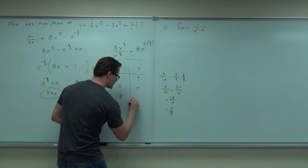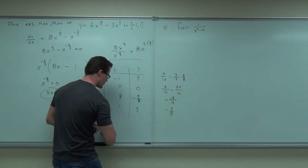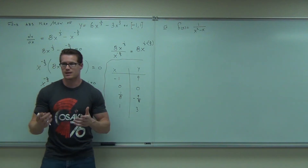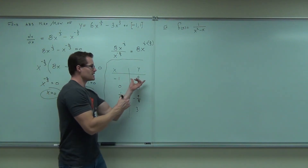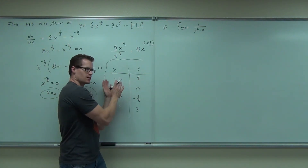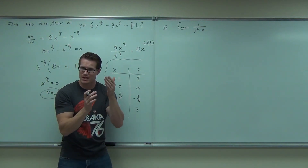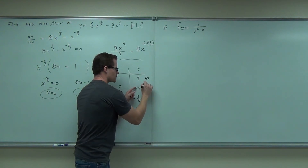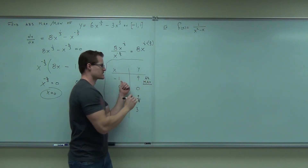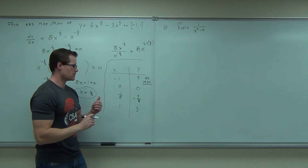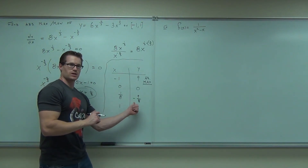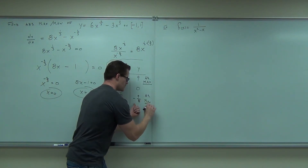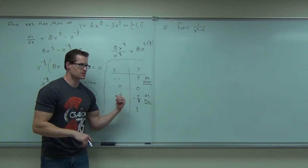Which is the largest number that we attained? That is your absolute max. The absolute max is not negative one — that's just the place on the x-axis where you get it. So this is your absolute max; it occurs at x equals negative one. And the absolute minimum occurs at x equals one-eighth.